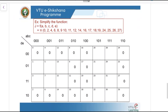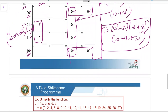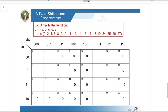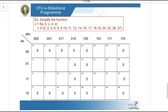Let us see the next example. Simplify the function J equals f of A,B,C,D,E equals pi of 0,2,4,6,8,9,10,11,12,14,16,17,18,19,24,25,26,27. It is a 5-variable K-map.